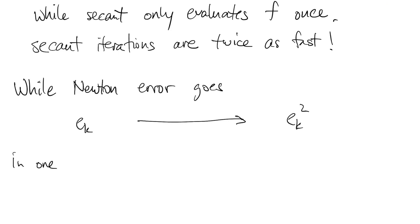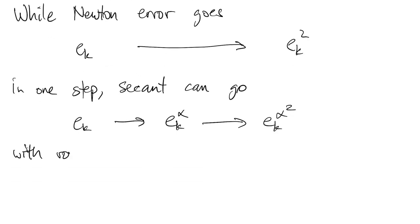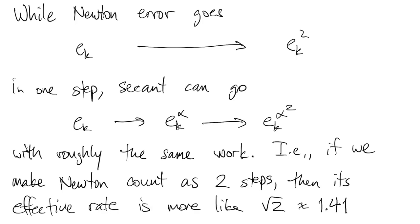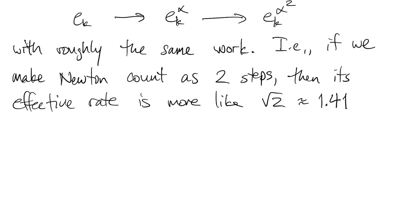So in that sense, secant iterations could be expected to be twice as fast. The arithmetic of the formula doesn't really matter. It's those f evaluations that normally absorb the time in a difficult problem. So while the Newton error does square in one step, in the same amount of time or the same amount of work, we can go two steps and get alpha squared in the secant method. In other words, if we sort of normalize the iterations to equal work, if we counted Newton as two steps instead of just a single iteration, well, it would have to be the square root of two as the rate. And that's about 1.4. So when you measure work in this way, not only is secant more convenient because you don't need f prime, it's faster too.